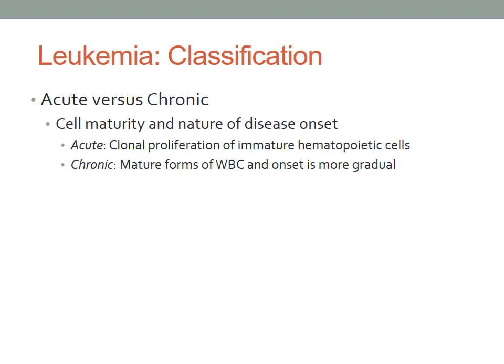Chronic leukemia involves more mature blood cells. There are many types of chronic leukemias — some produce too many cells and some cause too few cells to be produced. These blood cells replicate or accumulate more slowly and can function normally for a long period of time. Some forms of chronic leukemia initially produce no early symptoms and can go unnoticed or undiagnosed for years.